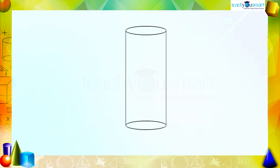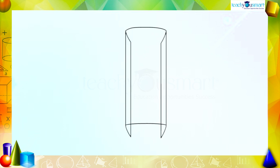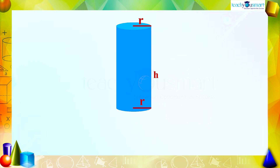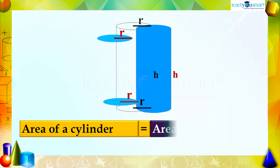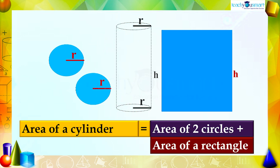But how can we find the surface area of the curved surface? Take a cylinder — when we cut the cylinder vertically using a scissor and open it, we get a rectangle. So we can find the areas of two circles and the area of that rectangle.